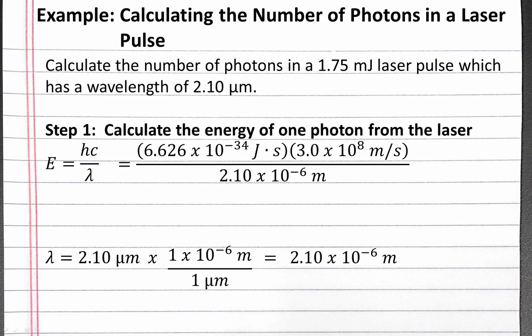times the speed of light, which is 3 times 10 to the 8th meters per second, divided by the wavelength, which is 2.10 times 10 to the negative 6th meters.